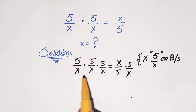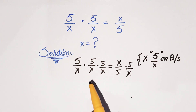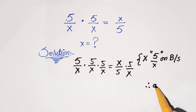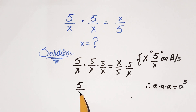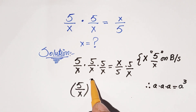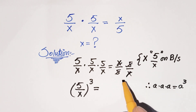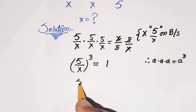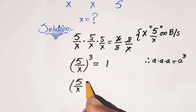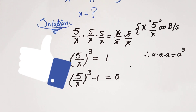On the left-hand side, we have 5 over x multiplied three times, which is (5/x)³. As we know, a times a times a equals a cubed. On the right-hand side, canceling 5 with 5 and x with x gives 1. So (5/x)³ minus 1 equals 0.